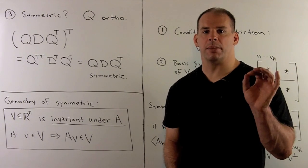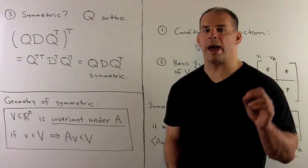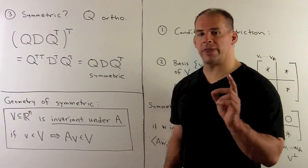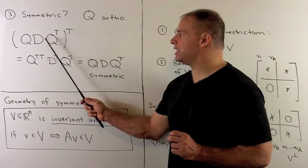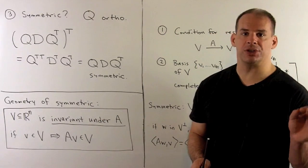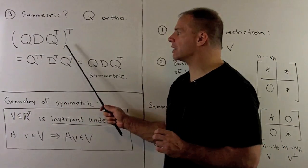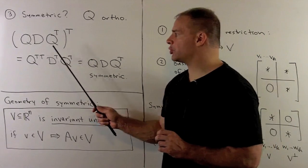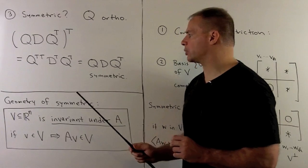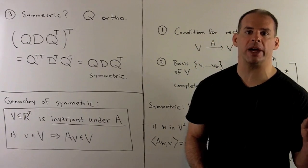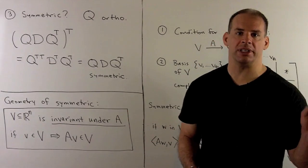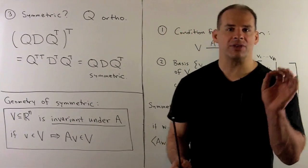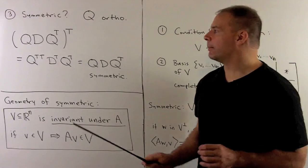Third, what's the evidence that a symmetric matrix has such nice behavior? We'll work backwards. Start with Q orthogonal and a diagonal matrix D. Conjugate D by Q to show that result is symmetric: Q D Q inverse, and since Q is orthogonal, Q inverse equals Q transpose. Taking the transpose of this product, we reverse the order and transpose each term: Q transpose transpose, D transpose, Q transpose. The double transpose gives back Q, and since D is diagonal, D transpose equals D. So we get our product back — this matrix is symmetric. This gives evidence that every symmetric matrix might be writable in this form.